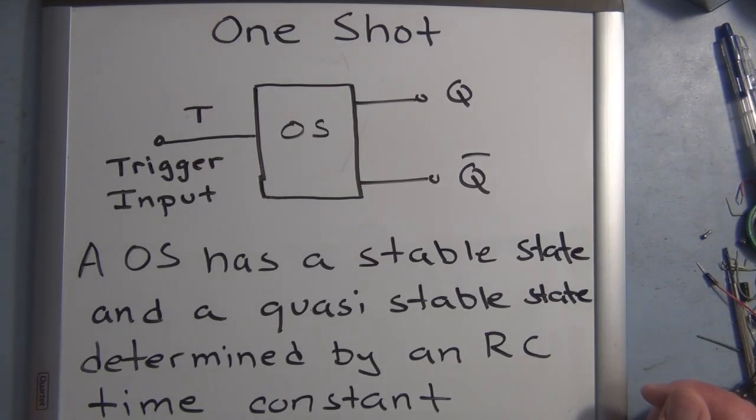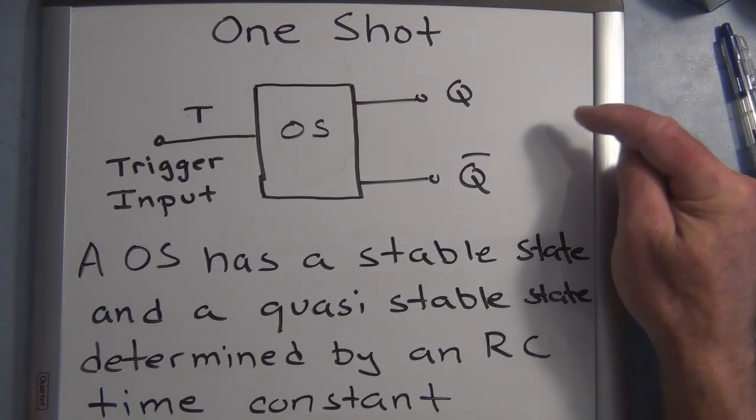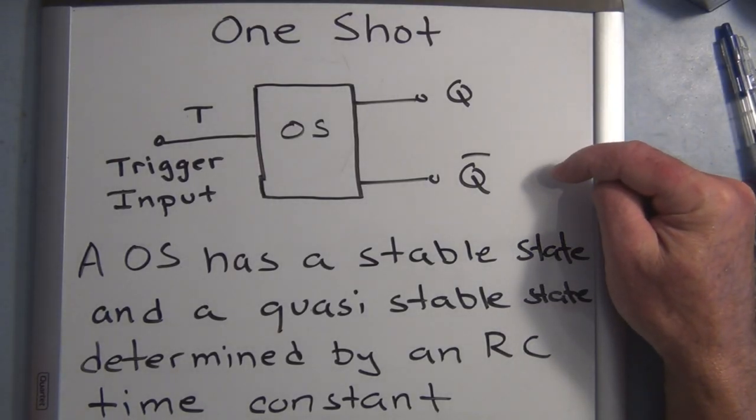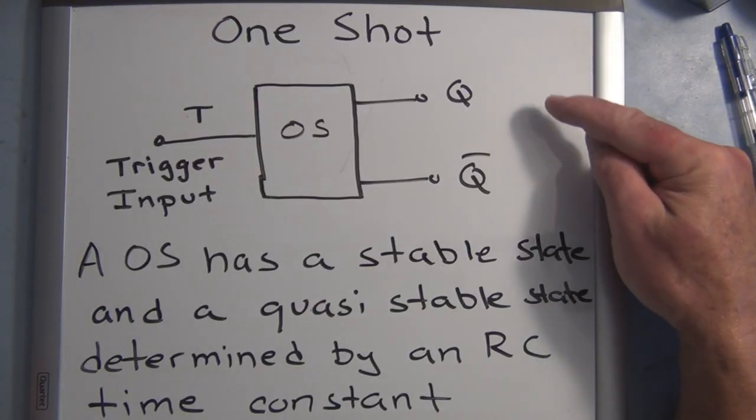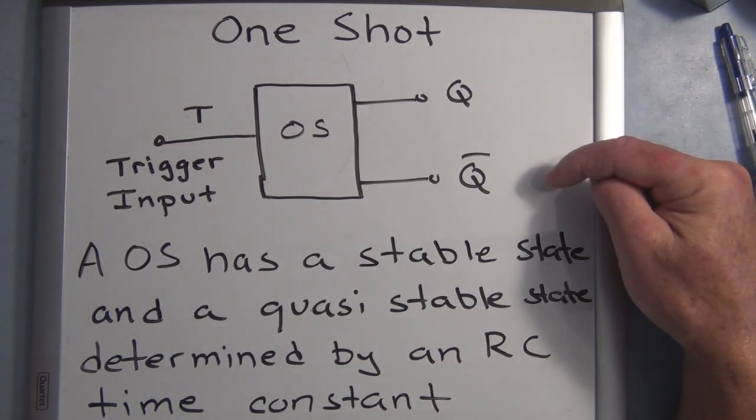Unlike a flip-flop which has two stable states where you have two outputs Q and Q naught, and if Q is 0 Q naught is 1 and if Q is 1 Q naught is 0 and it remembers that state.